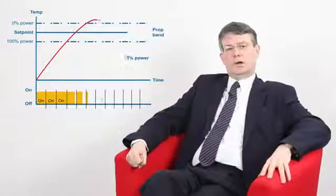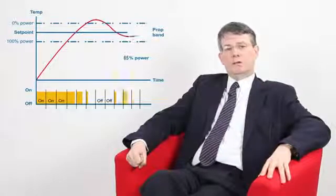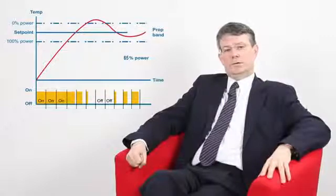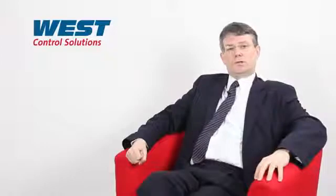If the user set a cycle time of eight seconds and the output was on for two and off for six, this would equate to 25% of power. Similarly, if the cycle time was set to 64 seconds and it was on for 16 and off for 48, this would also be 25% of power. However, the number of switching cycles would be reduced considerably, so you can see how the user can control how often their devices are switched.